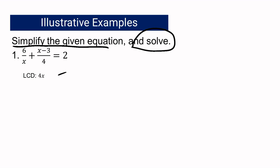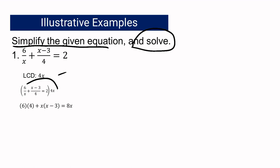Now, what are you going to do with this LCD? You are going to multiply the LCD to our equation — multiply it by 4X to each and every term. If we multiply 6 over X by 4X, you cancel out X, so what's left is 6 and 4. Multiplying the second term, (X minus 3) over 4 times 4X, you cancel out 4, so what's left is X multiplied by (X minus 3). And multiplying the LCD by 2, the answer will be 8X.